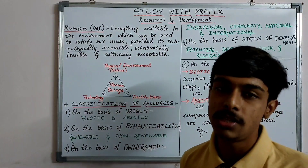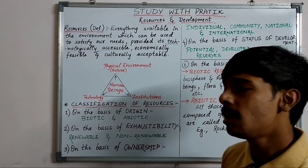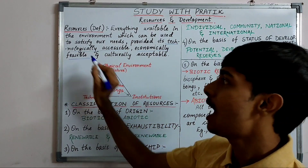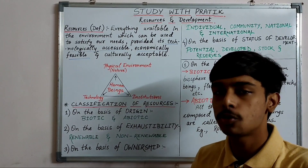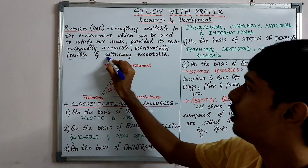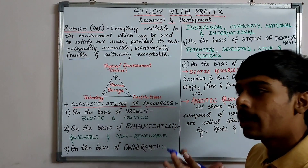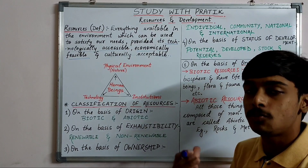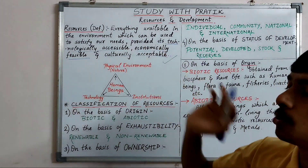The second point is economically feasible — meaning it should be affordable; with whatever wealth we have, we should be able to procure and extract it. The third and final point is culturally acceptable — it should be accepted and recognized by society.